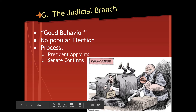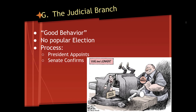Our only branch of government that is not directly or indirectly elected by the people is the judicial branch. The Framers built in safeguards because they knew judges had the most important job: resolving disputes and interpreting what our laws and regulations mean and how they should be applied. They instituted life tenure — justices serve during good behavior — freeing them to make controversial or difficult decisions unlike members of the legislature. There is no popular election. Instead, the president appoints someone they believe is the best option, and that person must receive the advice and consent of the Senate.